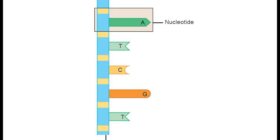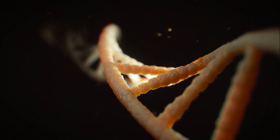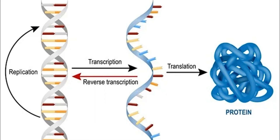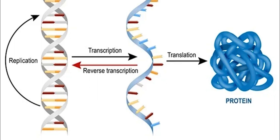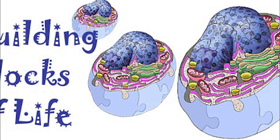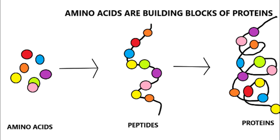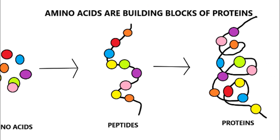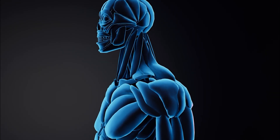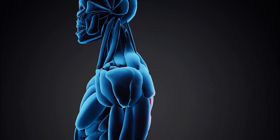These nucleotides are arranged in a specific order, forming the rungs of a ladder-like structure known as a double helix. Genes are specific sequences of DNA that provide the instructions for making proteins, which are the building blocks of life. Proteins are responsible for many important functions in the body, such as building muscle, fighting off infections, and regulating metabolism.